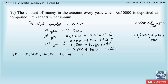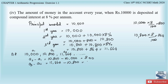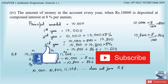Now we check whether 10,000; 10,800; 11,664 forms an AP. a2 minus a1 = 10,800 minus 10,000 = 800. a3 minus a2 = 11,664 minus 10,800 = 864. Since 800 is not equal to 864, the common differences are not equal. Therefore the list of numbers 10,000; 10,800; 11,664 does not form an AP. With this we end question number one from Exercise 1.1. In the next video I will solve the second question from Exercise 1.1. Thank you.